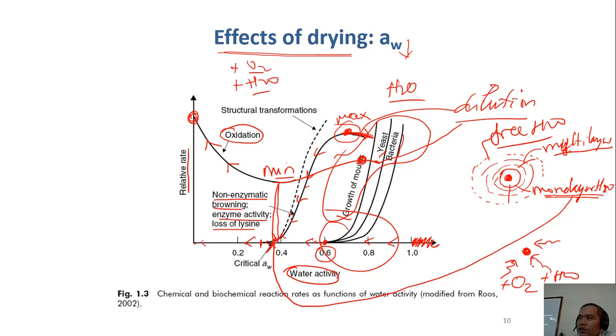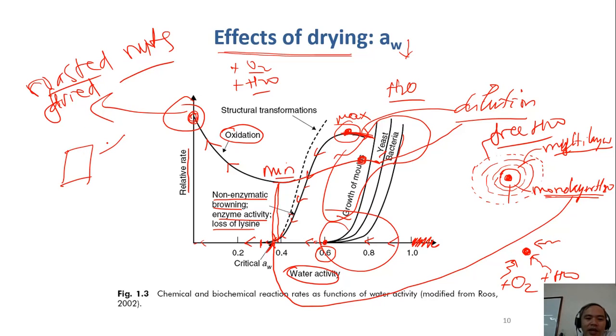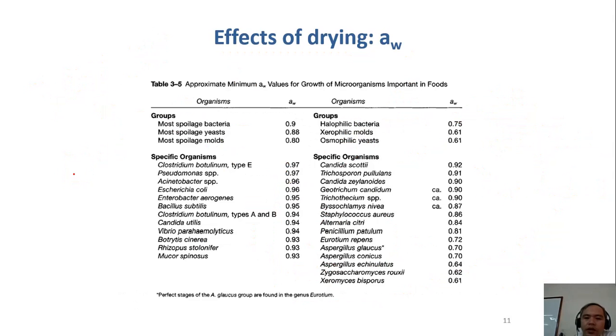So the oxidation becomes faster. This you can observe in like fried, roasted nuts, peanuts for example, or dry one or fried one. Fried nuts, roasted nuts. For example, when you roast peanuts and you put in a bag and you hang them under the light of the sun, they oxidize very fast.